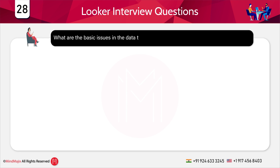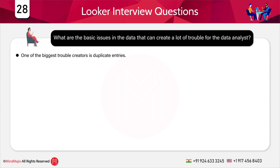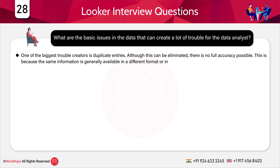The next question is: what are the basic issues in data that can create trouble for data analysts? This is a scenario-based question for people with hands-on experience. One of the biggest headaches is duplicate entries or duplicate data. Although you can eliminate this, there is no full accuracy possible because the same information is generally available in different formats. Common misspellings are another major trouble creator, and varying values can create tons of issues. Moreover, values that are illegal or missing can increase chances of errors and affect data quality greatly.